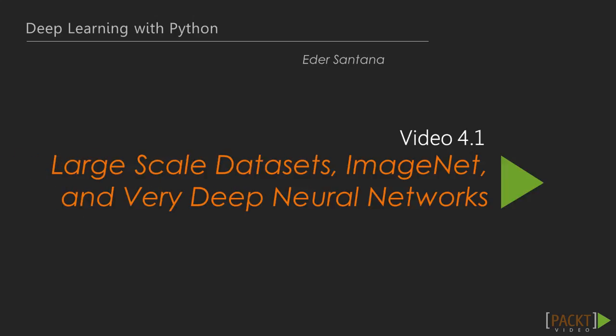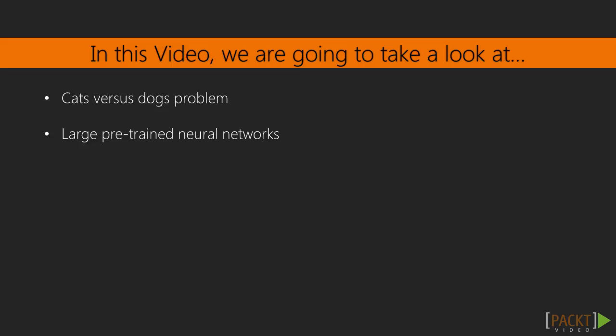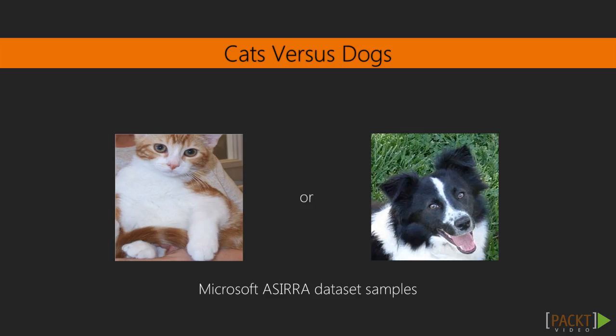Let's start with large-scale datasets, ImageNet, and very deep neural networks. In this video, we are going to define the cats versus dogs problem, and after that, we'll see how to find a large pre-trained model that we can reuse to solve it.